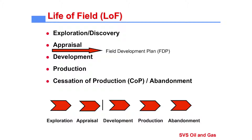Once the development is completed, then obviously you're going to produce the oil and gas. And the final stage of the life of field is the abandonment, which is sometimes called cessation of production. That's where you leave your area where you produced the oil and gas from in a clean, green-field fashion.